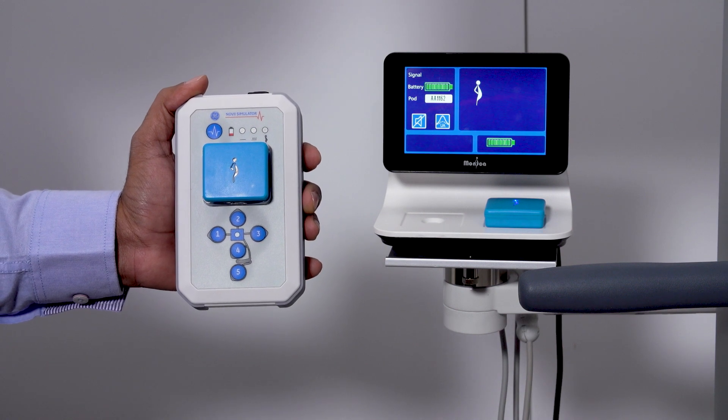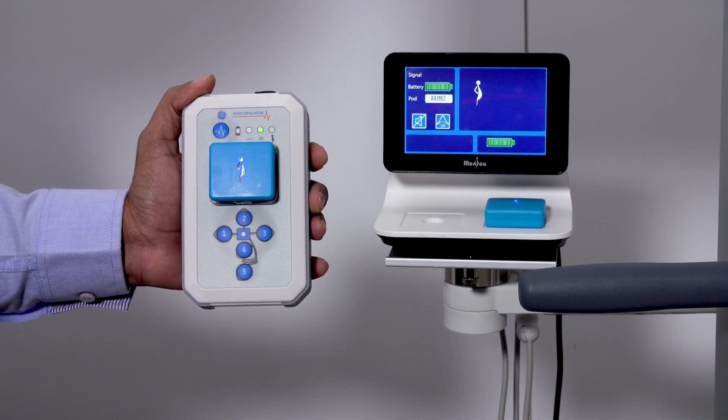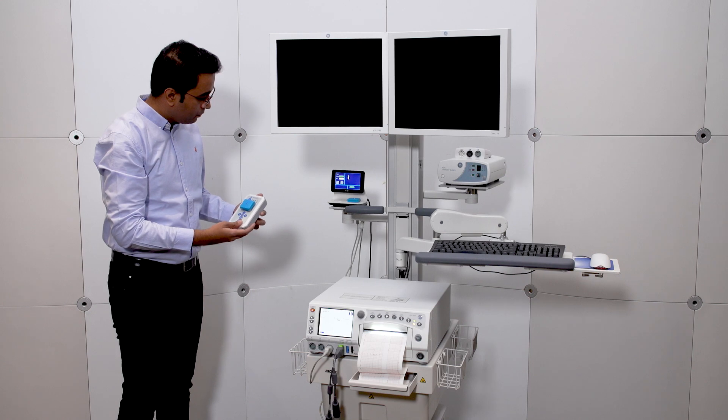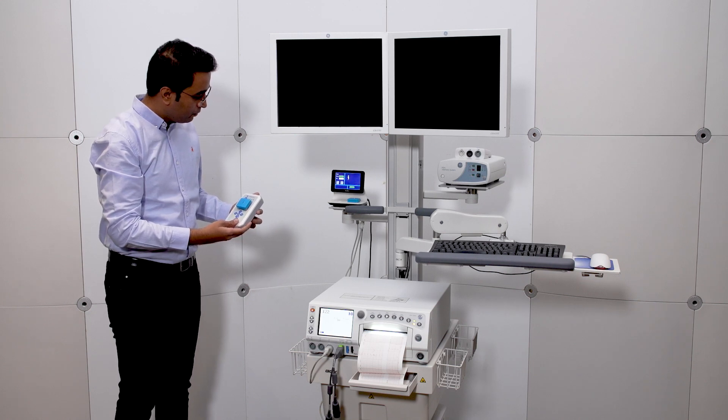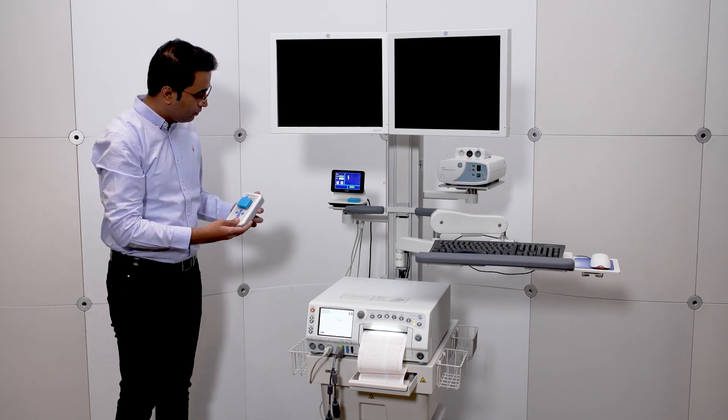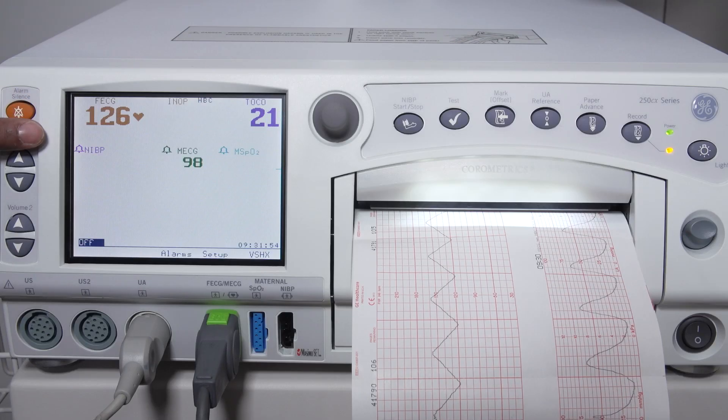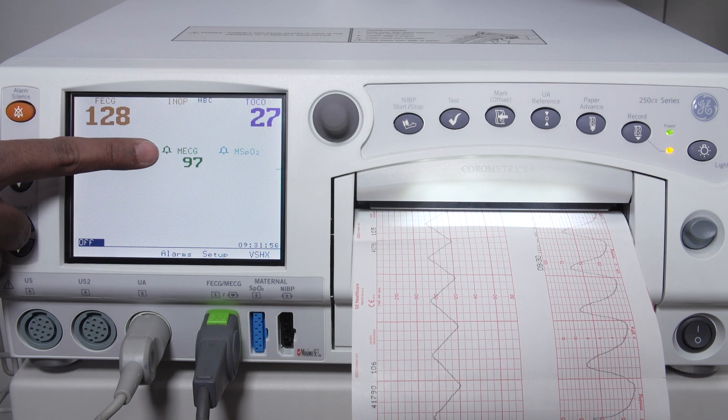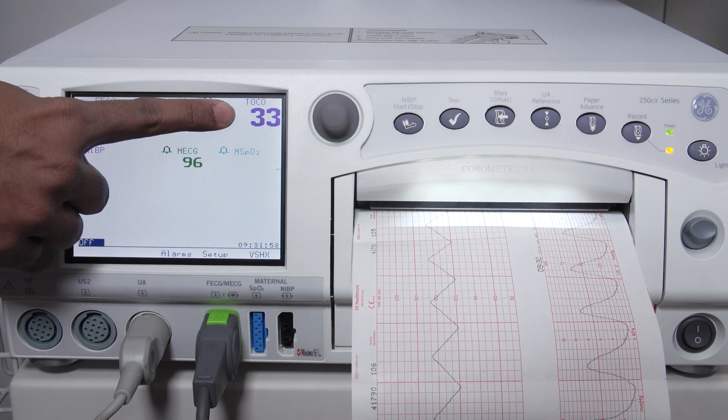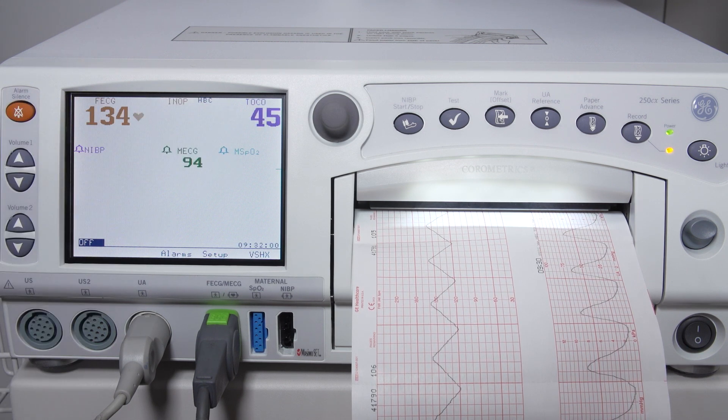Wait for the Novi monitoring to start. Be patient. When monitoring starts, the fetal heart rate quality indicator turns green. And the fetal heart rate, maternal heart rate, and uterine activity values are displayed on the Corometrics display screen.